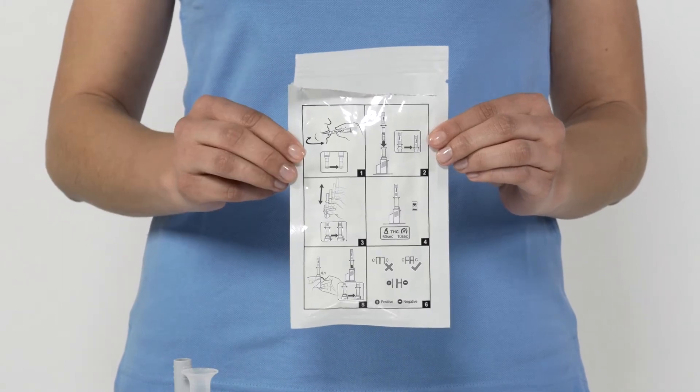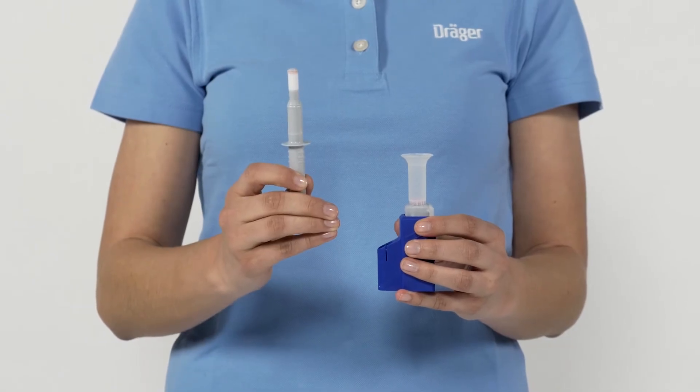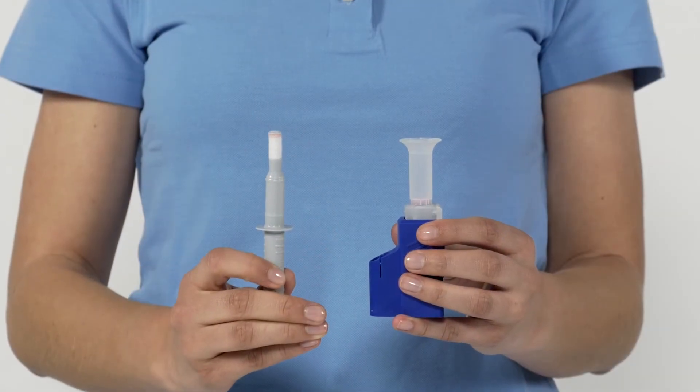The test kit consists of a sampler with a color indicator for collecting a saliva sample, which you take out first, and a test cassette for the analysis.